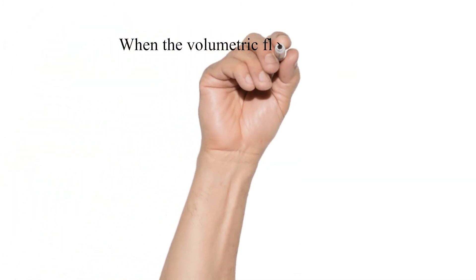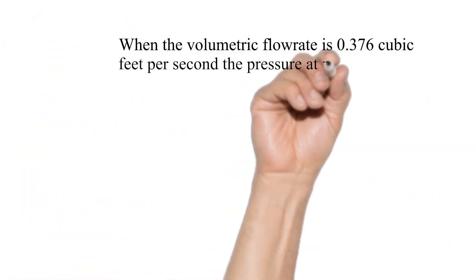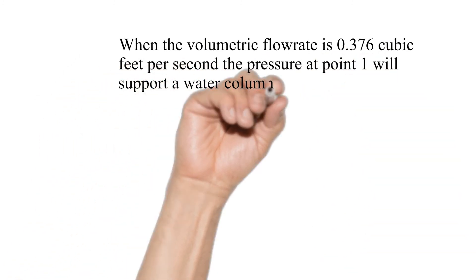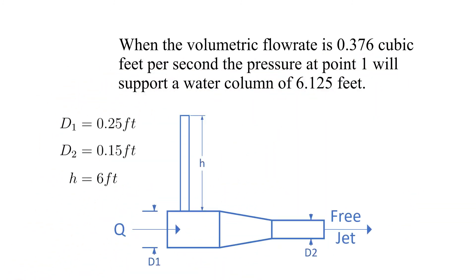What does this mean? When the volumetric flow rate is 0.376 cubic feet per second the pressure at point 1 will support a water column of 6.125 feet.